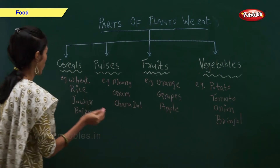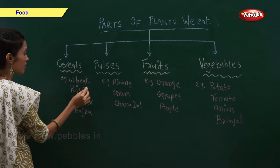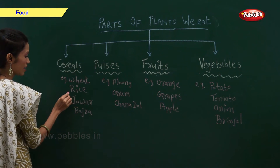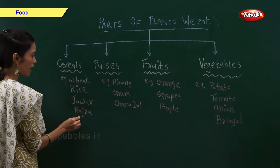So, examples of cereals are wheat, rice, jowar and bajra.